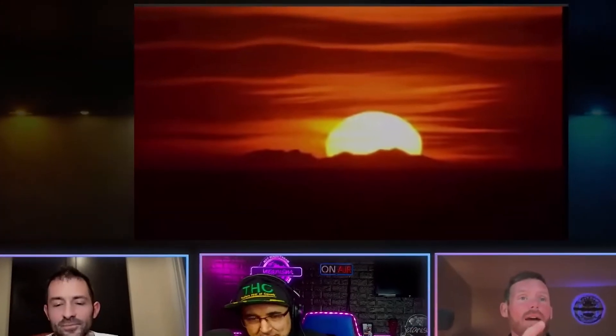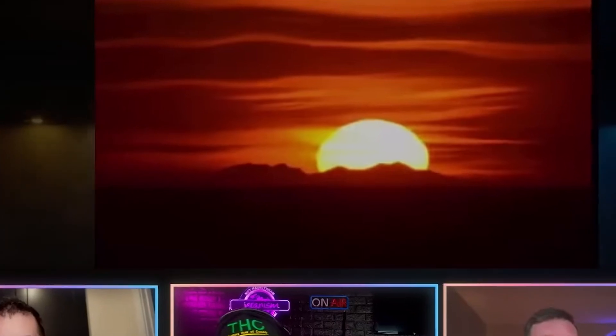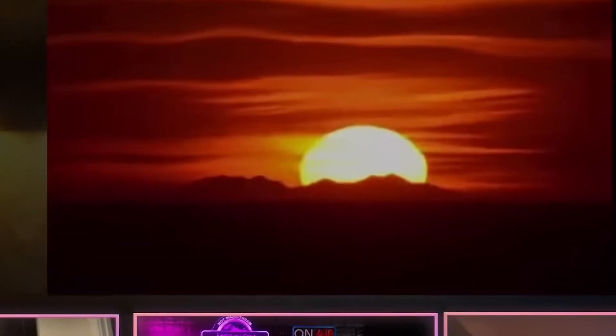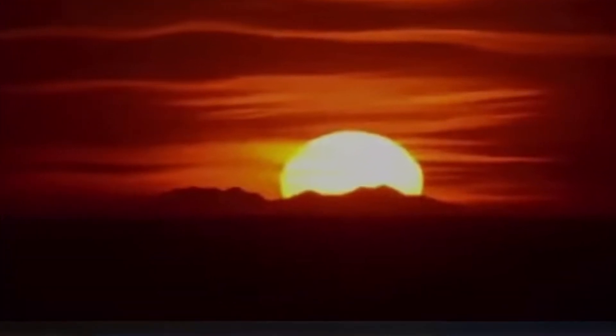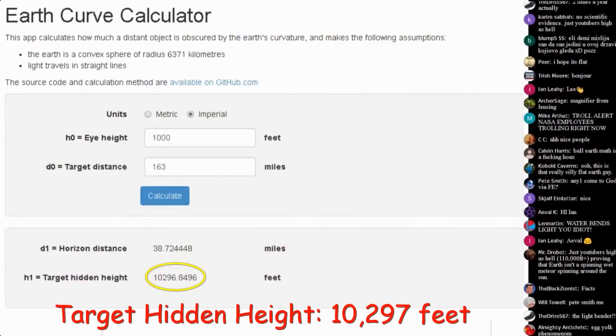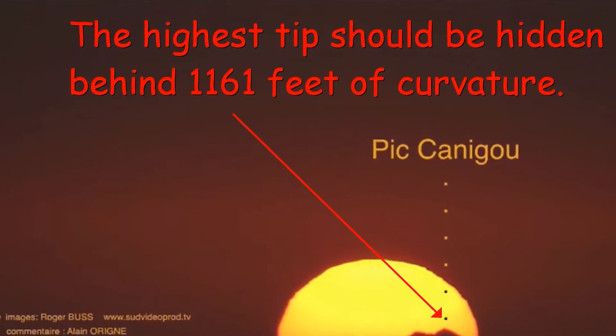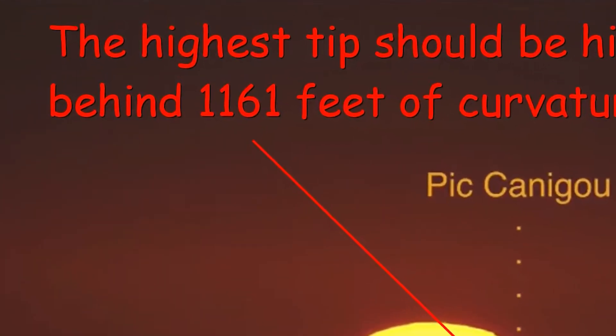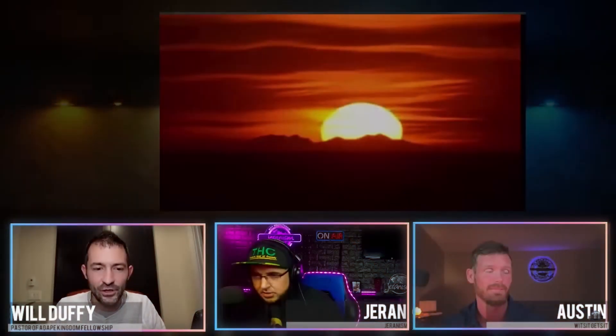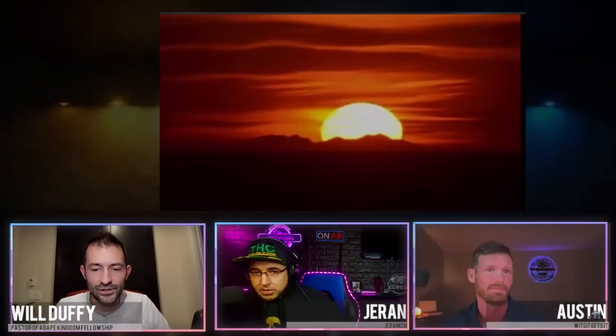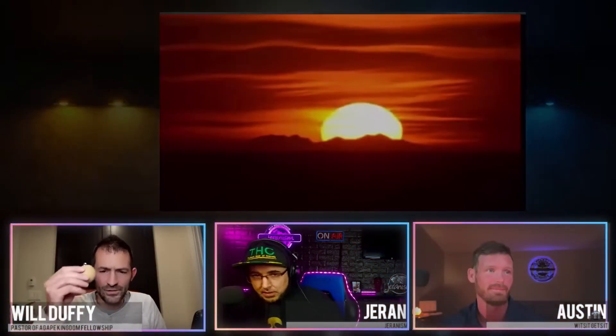One of their proofs is that Pic du Canigou in the Pyrenees in France can be seen on multiple occasions from the slopes of the Alps, and according to the globe, the peak of the mountain should be 1161 feet behind the curve. That's at least what Jaren stated in one of his videos, and he repeated that during a debate with Will Duffy. Yet, we can see the mountain, thus the curve doesn't exist, thus the earth is flat. Again, that's at least what I get from their argument.